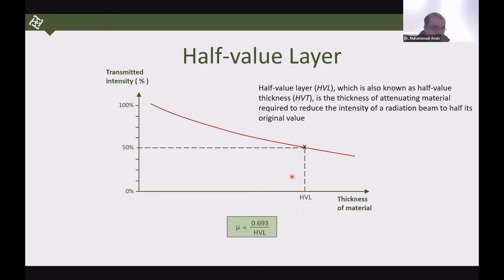The formula to remember is: linear attenuation coefficient equals 0.693 over HVL. One key thing to remember is that the attenuation coefficient and the half value thickness are inversely proportional.